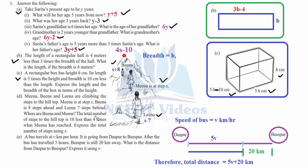The total number of steps to the hilltop is 10 less than 4 times the step where Meena has reached. Meena has reached step s, so 4 times s is 4s. The total number of steps is 10 less than that, so the total steps from the starting point to the summit is 4s minus 10.